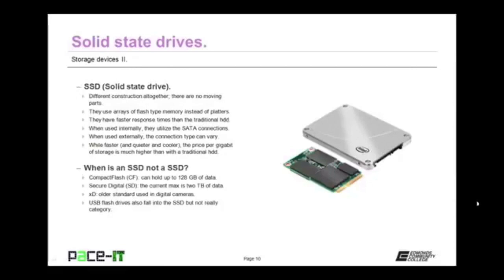SSDs are faster, quieter, and cooler than the traditional hard drive, but the price per gigabyte of storage is much higher. So they're not going to replace the traditional spinning platter hard drive soon, at least not until the price comes down. Some devices are a type of solid state drive but not really considered a solid state drive — such as compact flash. Compact flash is a type of removable storage that could be considered a solid state drive because it holds data and there are no moving parts, with a capacity up to 128 gigabytes.